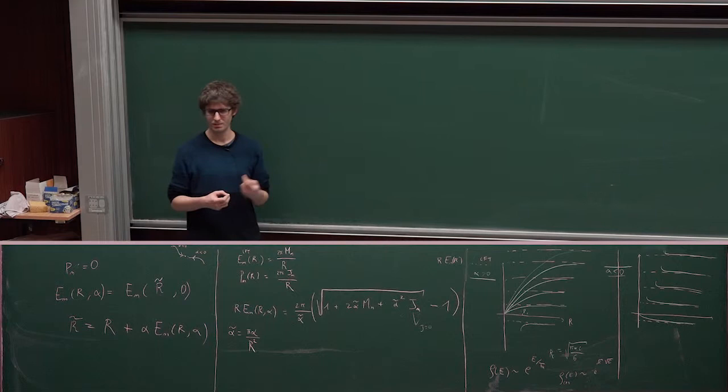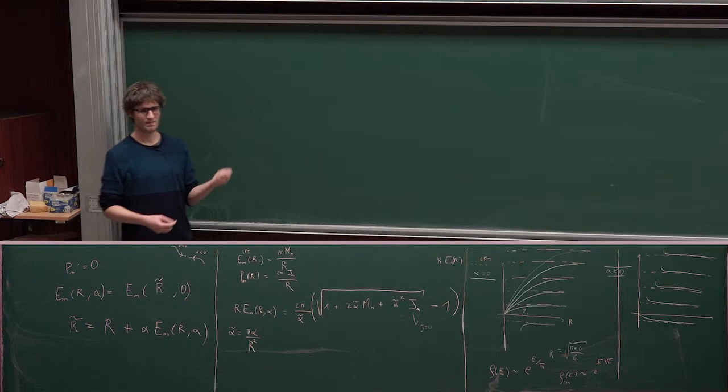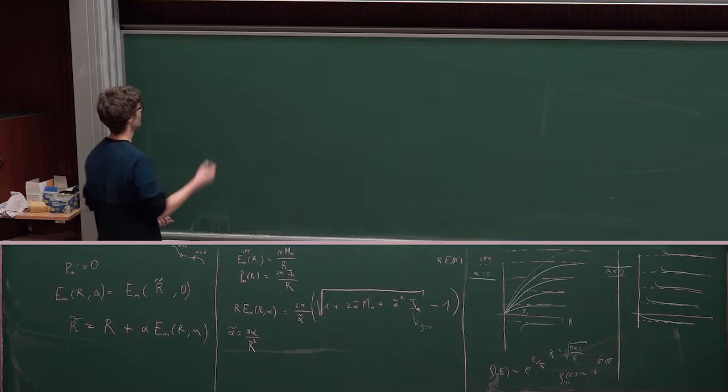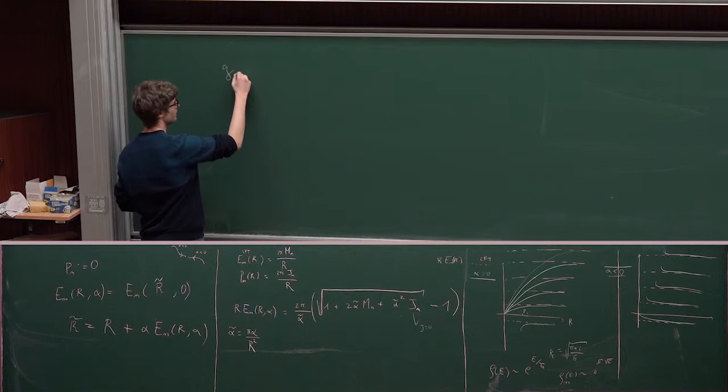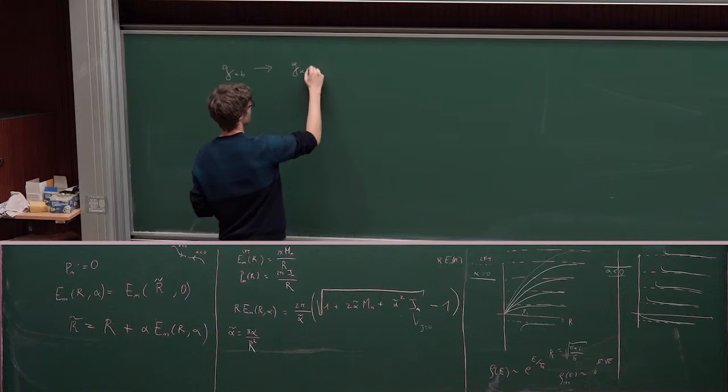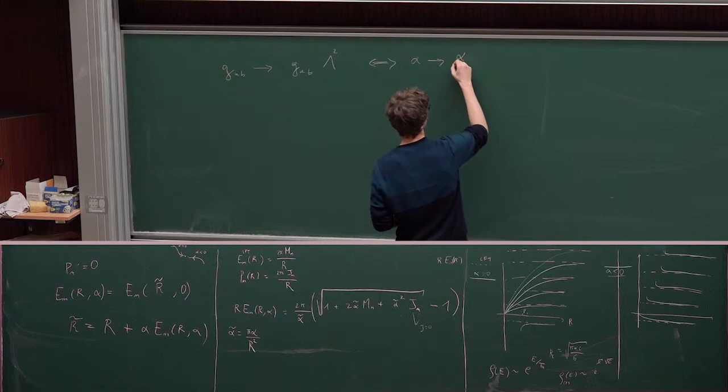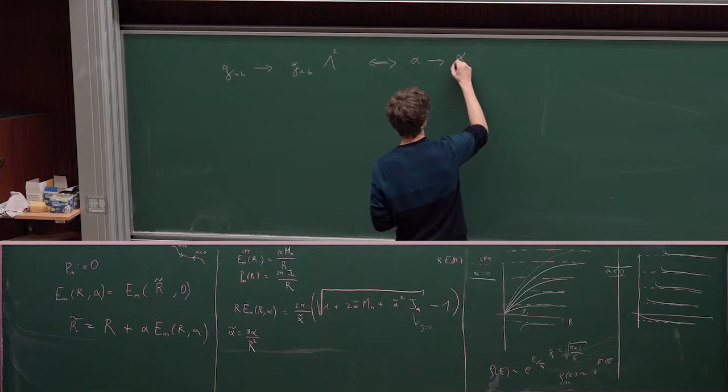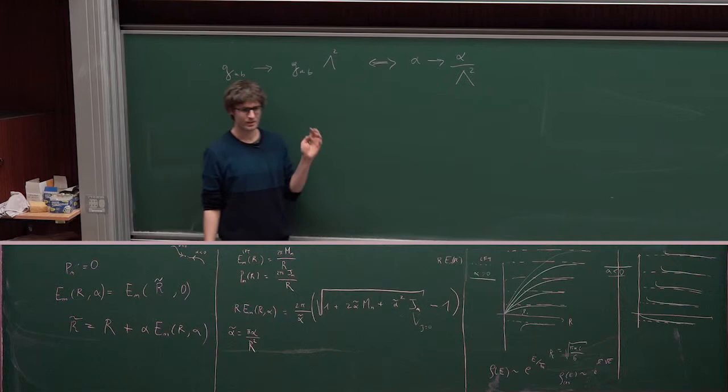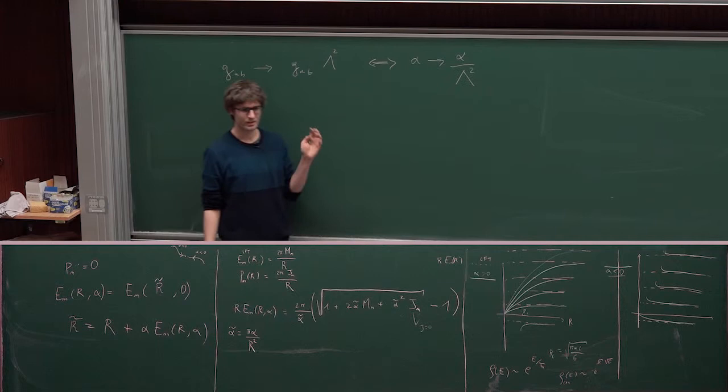And because this is non-perturbative, you can expect that the scaling of this parameter is something exact. And, so we saw it in these energy levels that the combination that appears is alpha over R squared. So, if you put your theory in some space and you rescale the metric with some factor, this should be equivalent to just rescaling alpha in this way.